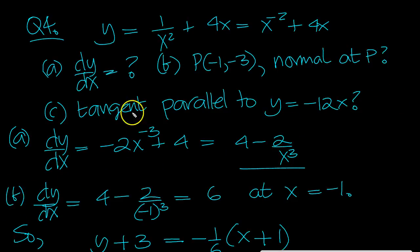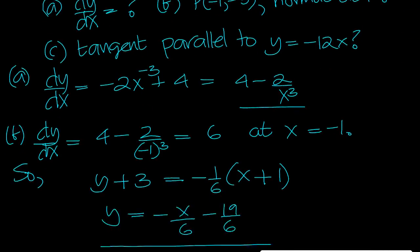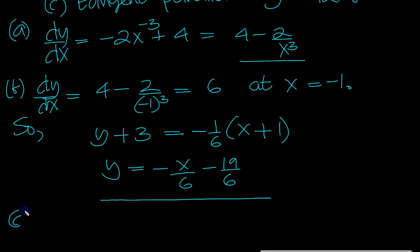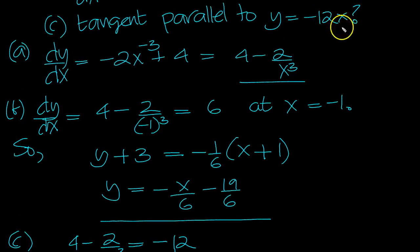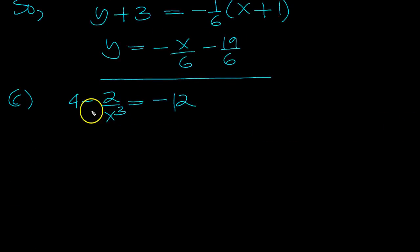Now part c, tangent parallel to this. So 4 minus 2 over x cubed equals -12. When is this gradient equal to minus 12?